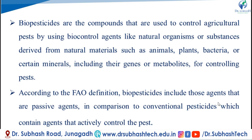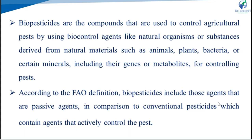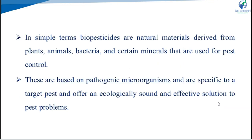According to the FAO definition, i.e. Food Agriculture Organization definition, biopesticides include those agents that are passive agents in comparison to conventional pesticides which contain agents that actively control the pest. In simple terms, biopesticides are natural materials derived from plants, animals, bacteria and certain minerals that are used for pest control. These are based on pathogenic microorganisms and are specific toward target pests and offer an ecologically sound and effective solution to pest problems.